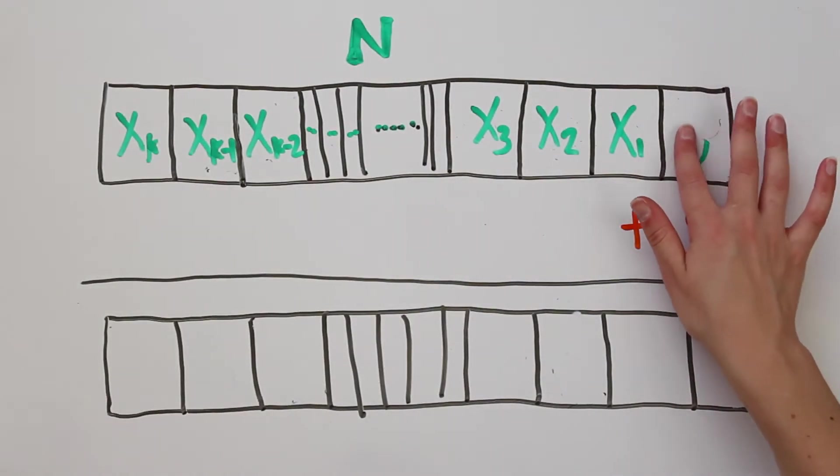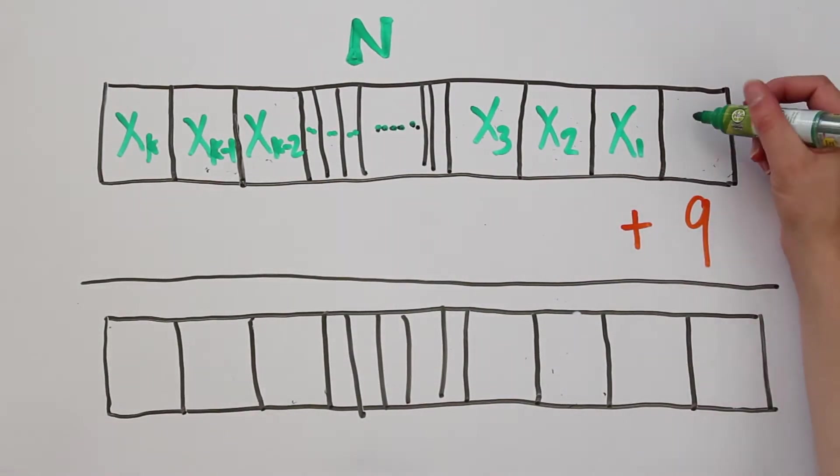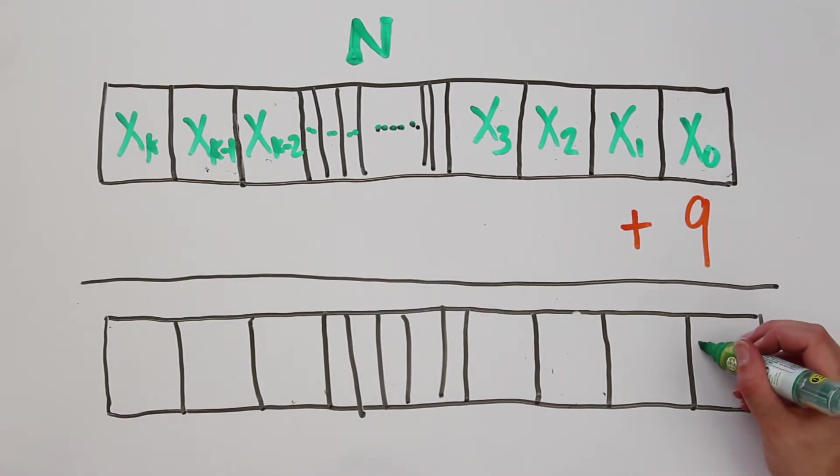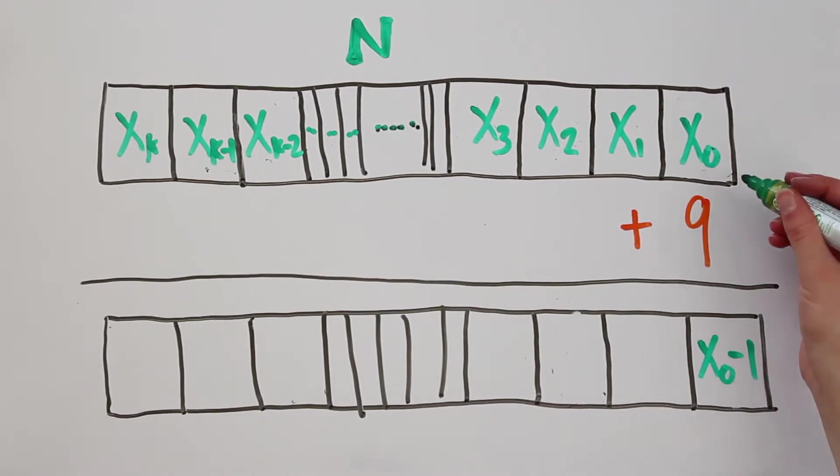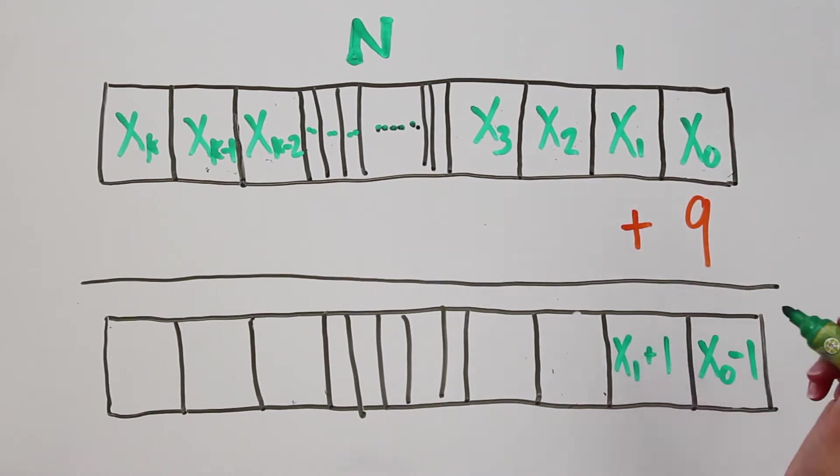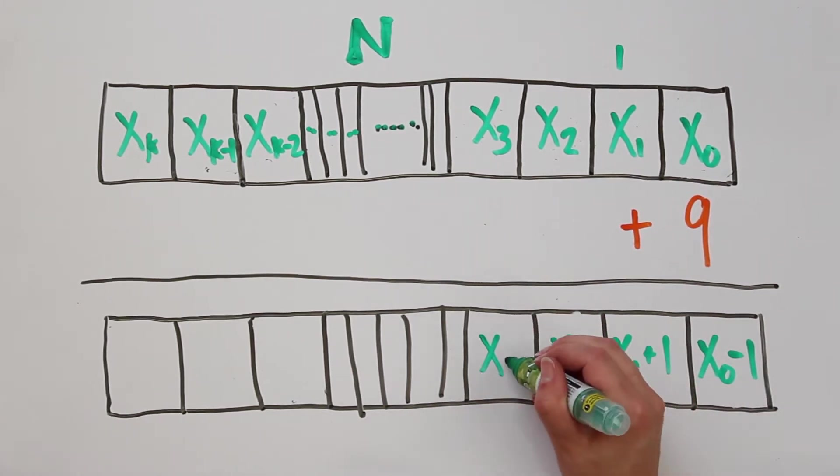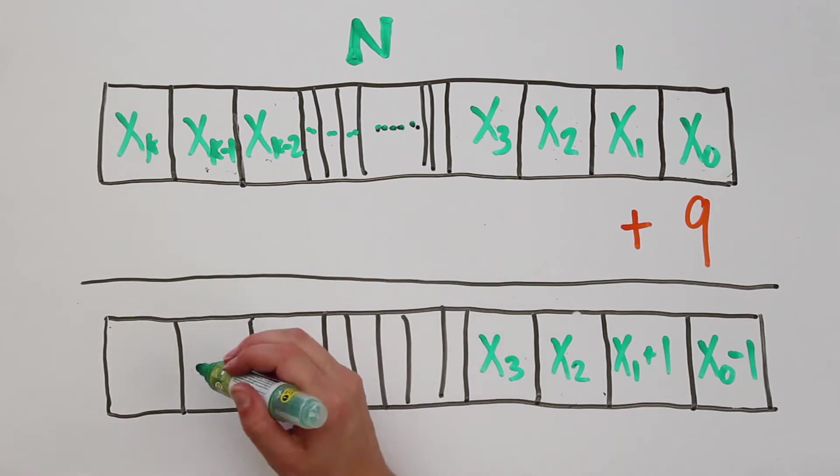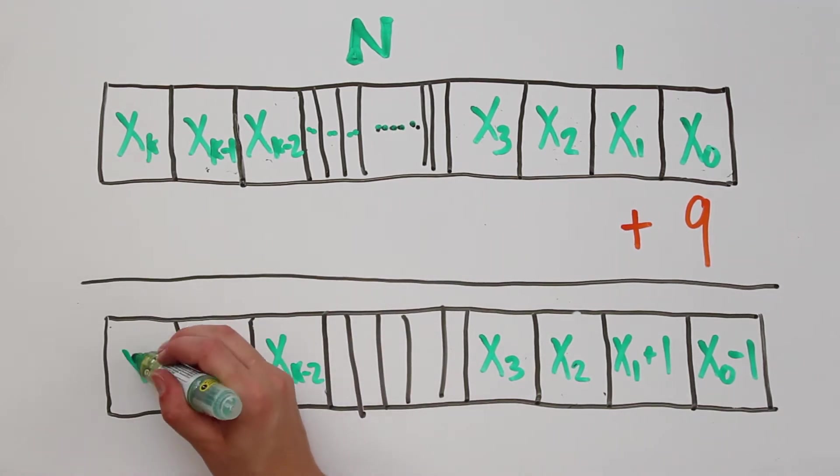Now, pretend x0 is not 0. When we add 9 to n, the 1's place decreases by 1, we carry over a 10, and the 10's place increases by 1. Every other digit remains the same.